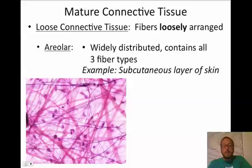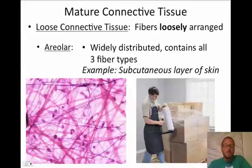An example of areolar tissue is the subcutaneous layer of the skin. It binds organs together and holds things together. When we dissect our cat, we'll see lots of this tissue all over the place as we remove the skin. A good analogy is plastic wrap — similar to how areolar tissue wraps up structures.